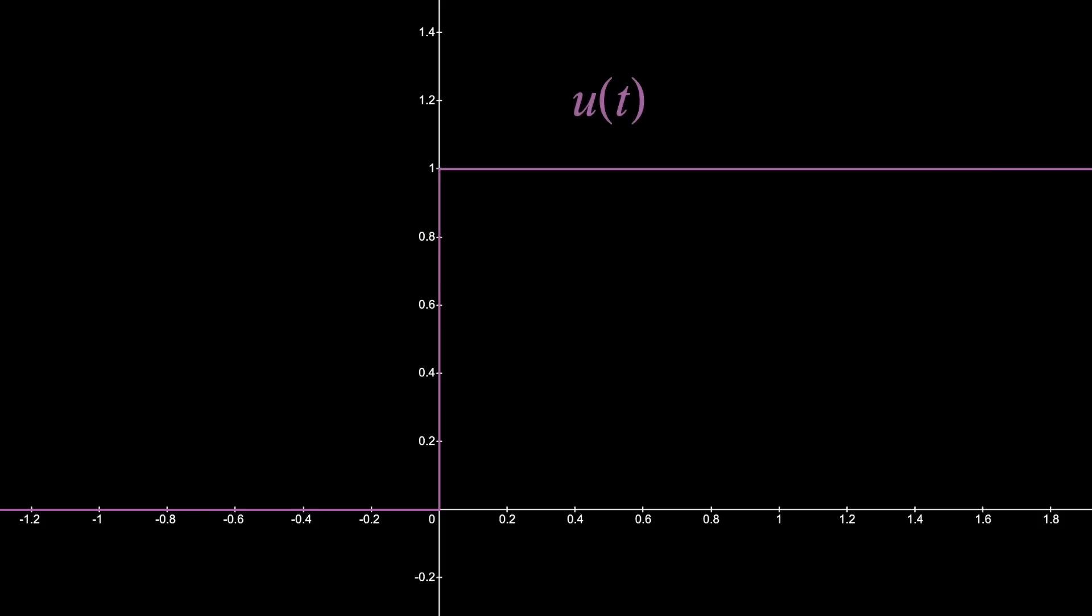And the derivative, the slope of this function, well, is zero everywhere except the origin, where we briefly get infinite slope. And hey, that's the Dirac delta function. That's u prime of t.